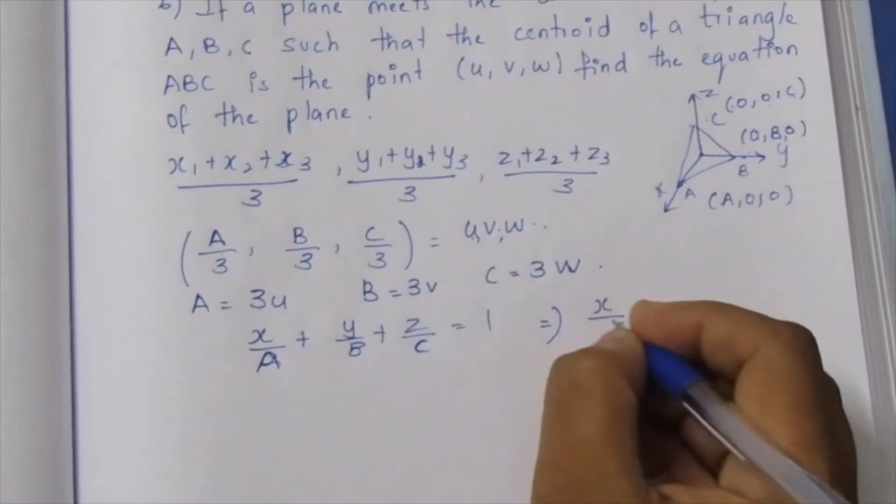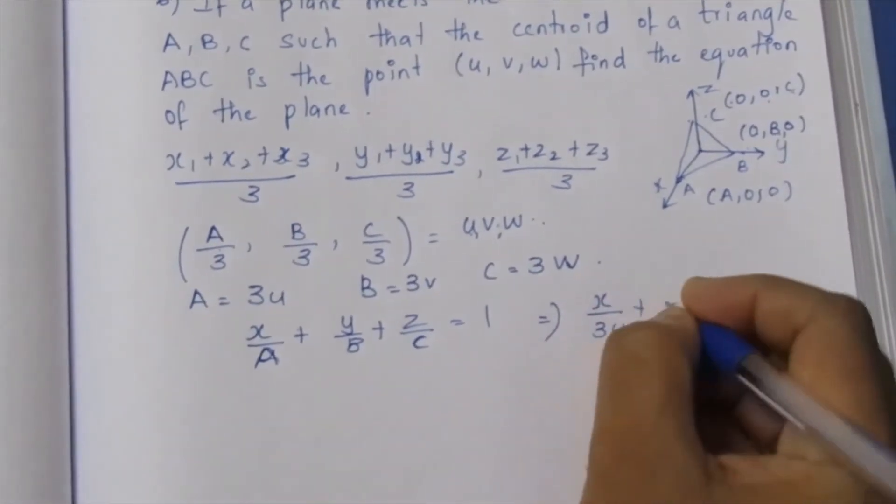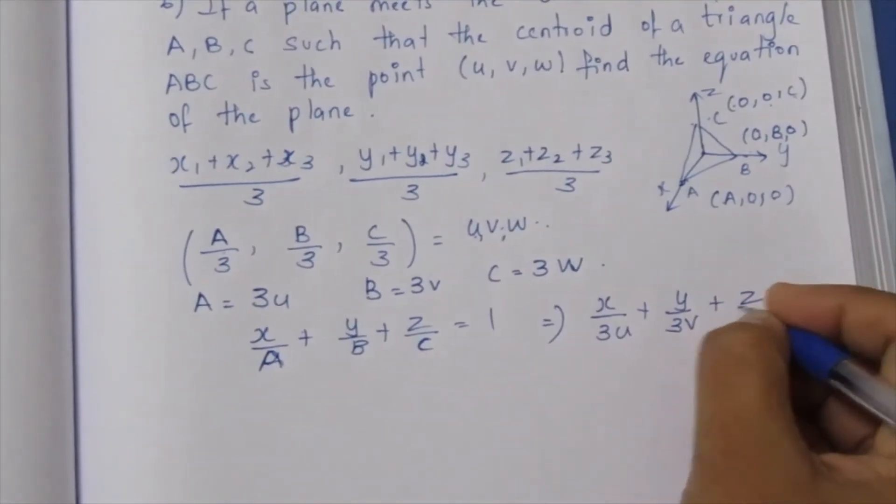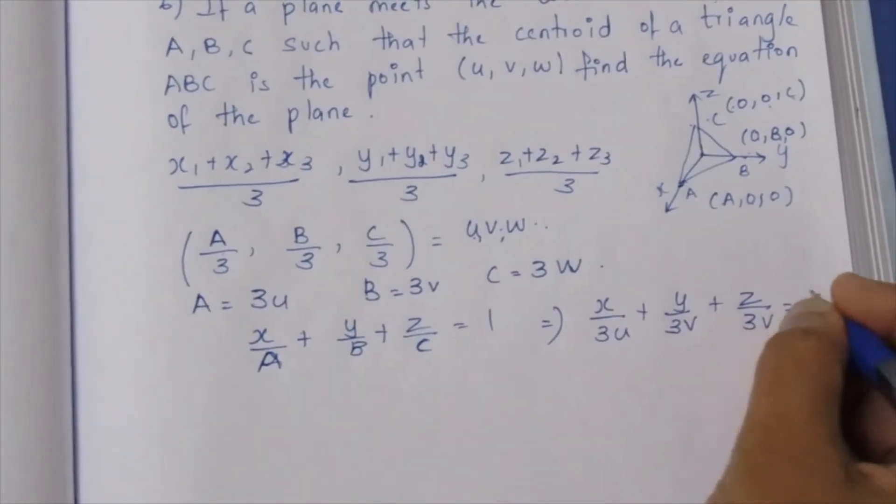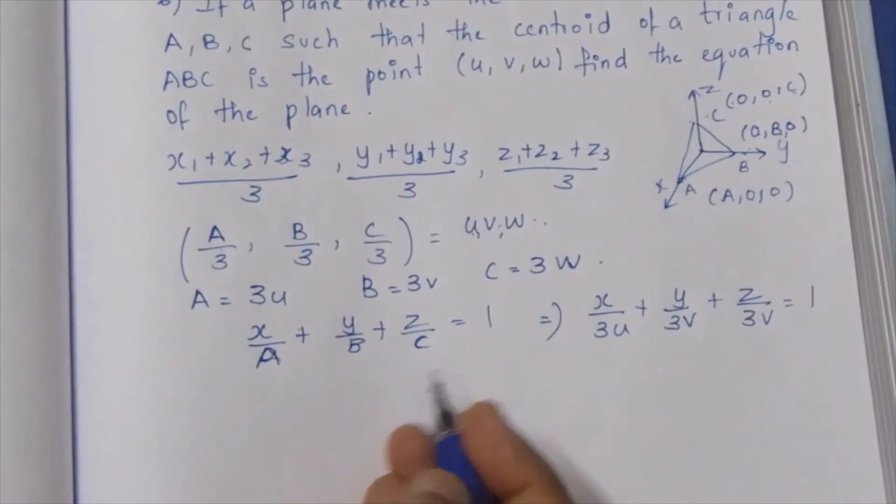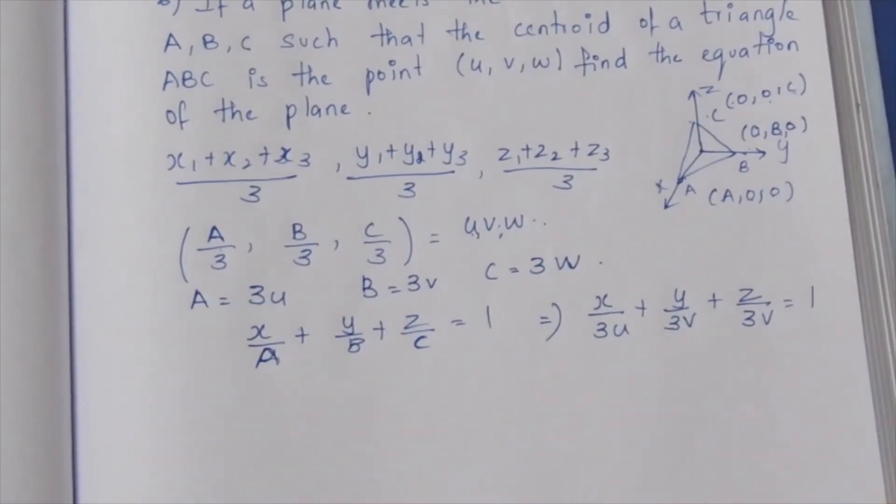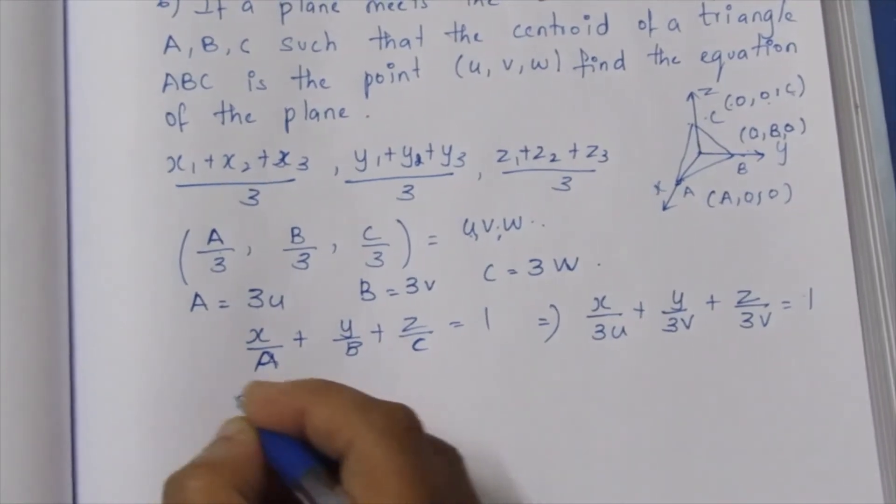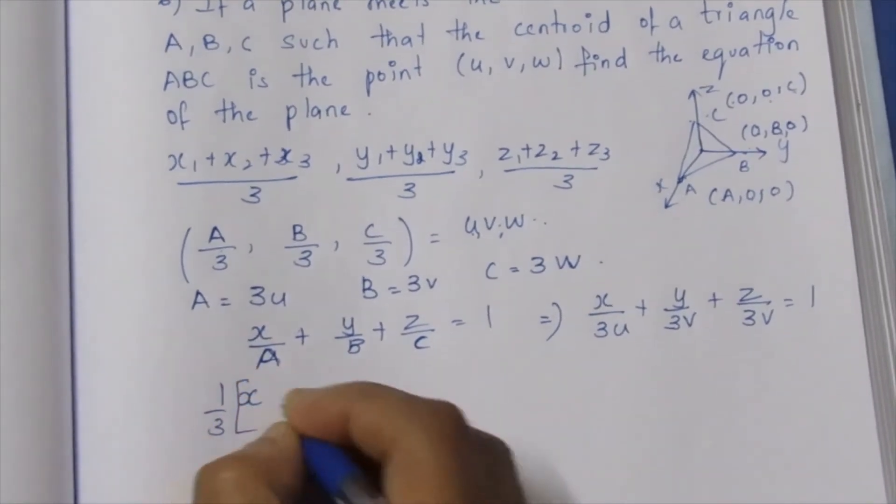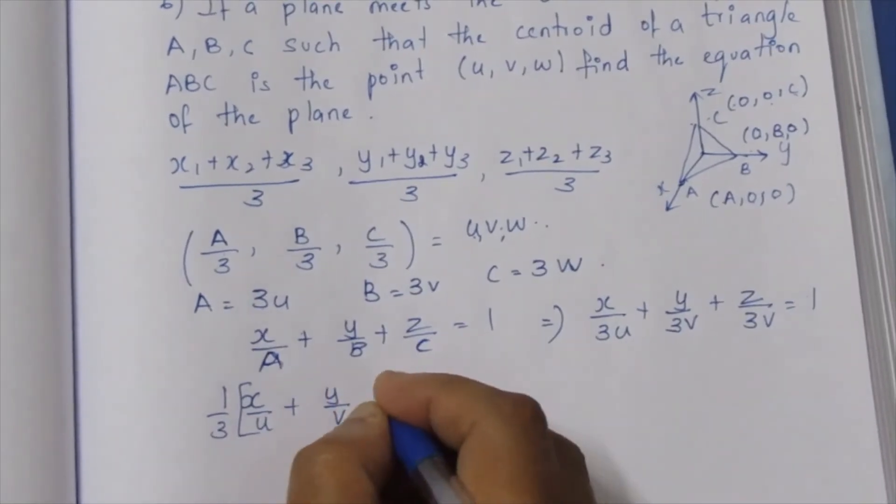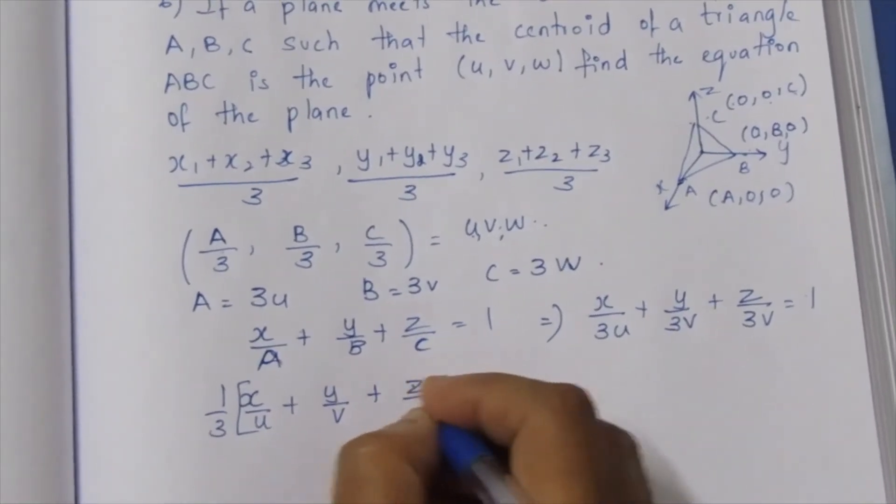Replacing A with 3u: x/3u + y/3v + z/3w = 1. Taking 1/3 common, we get (1/3)(x/u + y/v + z/w) = 1.